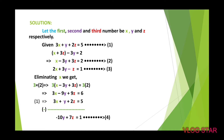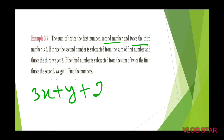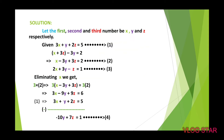Go through the question once again. The sum of 3 times the first number means 3x. Sum means addition. Then the second number is y, and 2 times the third number is 2z. So 3x plus y plus 2z is equal to 5. This is the first equation.